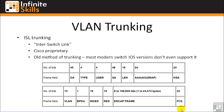Essentially, when a switch sees a frame going across an ISL link, it takes the frame and encapsulates it in the ISL protocol. It doesn't change any of the information in the actual frame — the source address, destination address, checksum, and so on. It just sends all that data across the link. The router or switch on the other end sees this frame arrive on the trunk port, rips off the ISL header and footer, and then examines the Ethernet frame just as if it were not trunked at all.